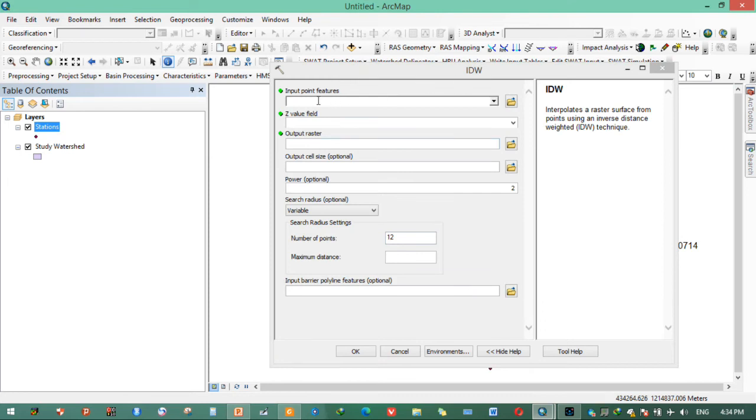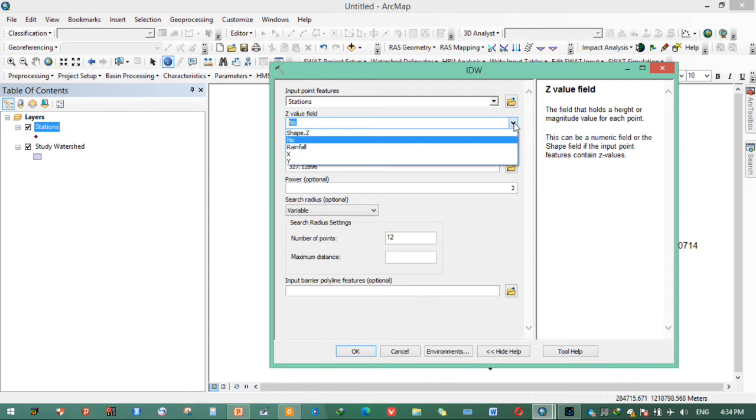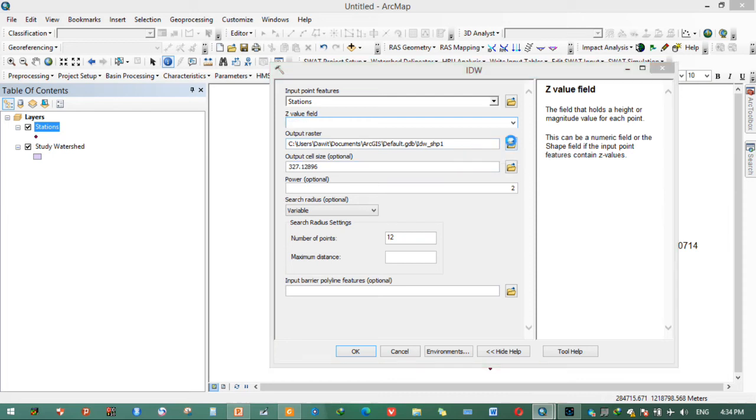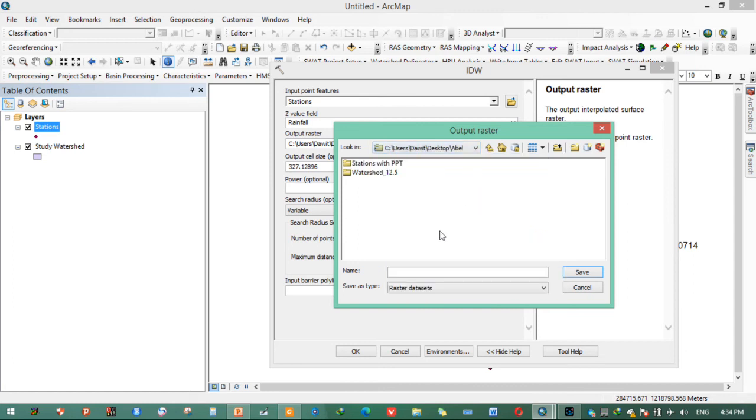Input point feature is station. Z-value is rainfall. Z is a rainfall that needs to be input for interpolation. Output raster should be saved in this folder. In this folder. Open it. Give it IDW. In this folder, give it IDW one.